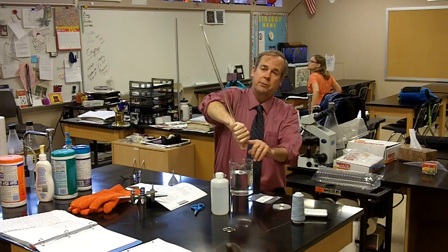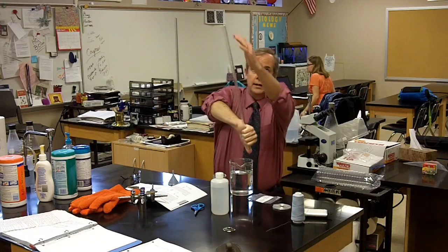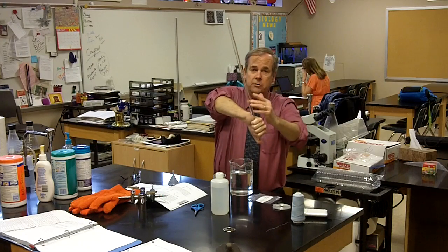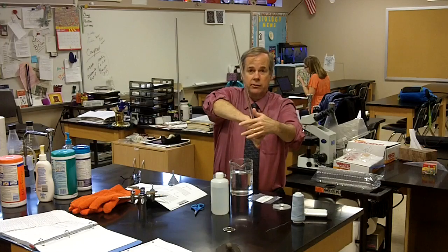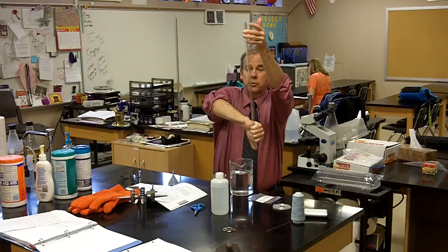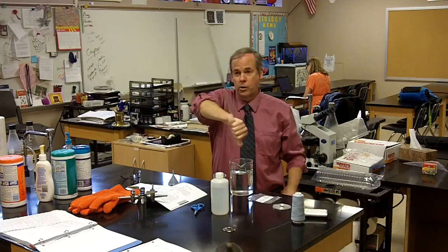So the magnesium will end up at the bottom of the tube. The acid will be at the top of the tube and as it drifts down because it's denser, it will begin to react with the magnesium. Gas will form and the gas will rise to the tube and we will collect it over water.